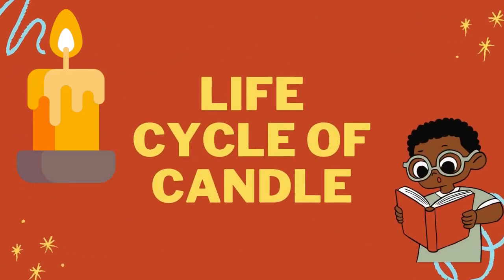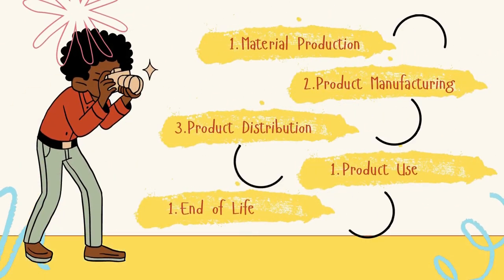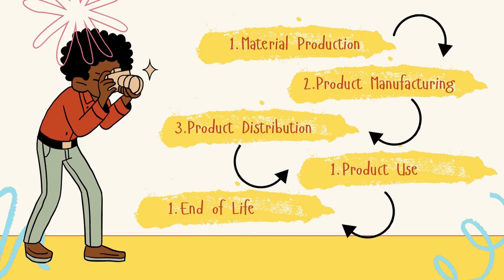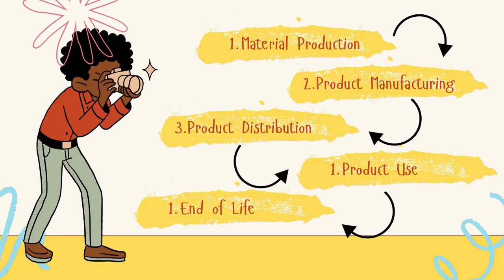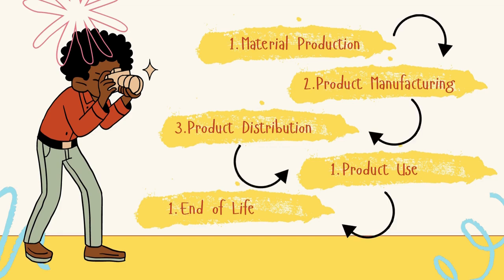Let's move on to the life cycle of candle. The life cycle consists of a few parts: 1. material production, 2. product manufacturing, 3. product distribution, 4. product use, and lastly the end of life.